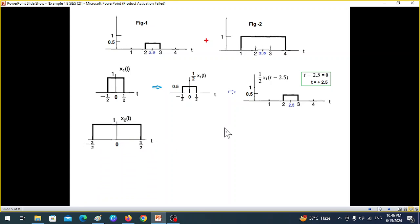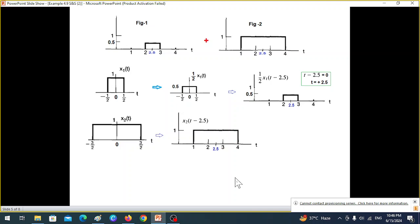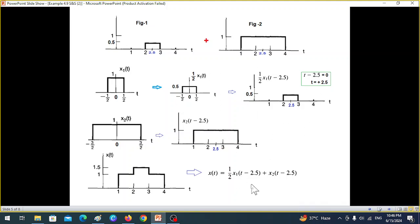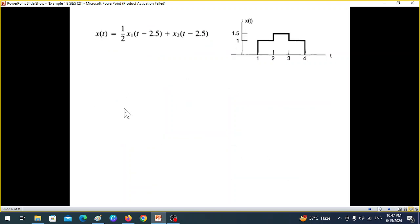And similarly the second part: just moving it by 2.5, it will be x2(t - 2.5). Now the whole signal we can write it in this form: x1(t - 2.5) plus x2(t - 2.5). And now we'll take the transform. This is where we were to find the Fourier transform, or to move into the frequency domain.